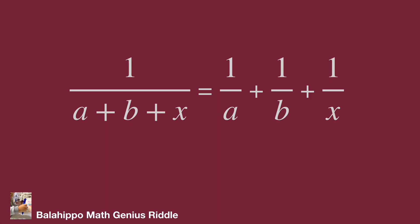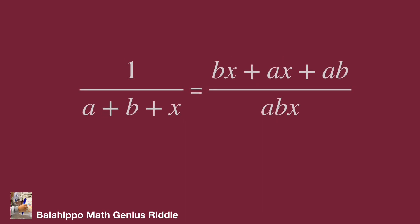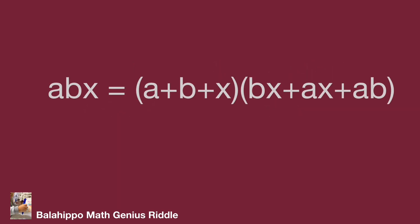There are fractions in this equation. For further math operations, I am going to remove the fractions. Combining the three fractions on the right side, the common denominator is abx, and the numerator becomes bx plus ax plus ab. Removing the fraction, we get abx equal to abx.